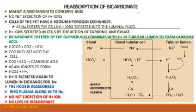The bicarbonate is filtered by the glomerulus and combines with the hydrogen ions which come into the tubular lumen to form carbonic acid. This carbonic acid is split by carbonic anhydrase to form carbon dioxide and water. Carbon dioxide will diffuse into the cell, where it is again ionized into bicarbonate and hydrogen ions, and again the hydrogen ions are secreted into the tubular lumen.